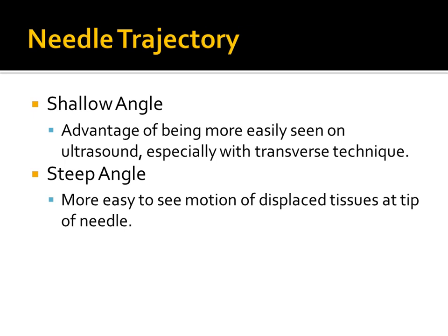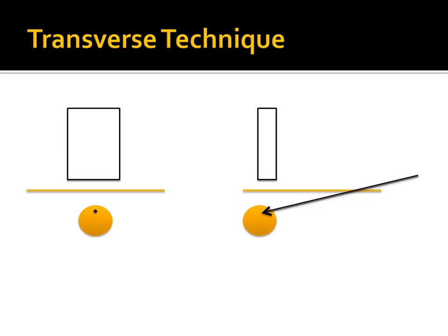A shallow angle has the advantage of being more easily seen on ultrasound, especially with the transverse technique. With a steep angle, it's easier to see the motion of displaced tissues at the tip of the needle. You can alternate between steep and shallow angles — if you're trying to enter a structure and you're at a shallow angle, you can see where the needle is; if you're not at the right depth, change the angle and see the movement of structures. As you penetrate the structure, re-adjust to a shallow angle to see the needle tip again.